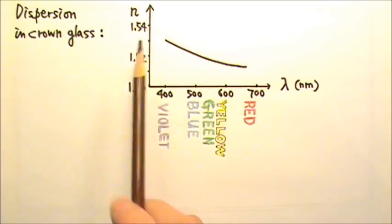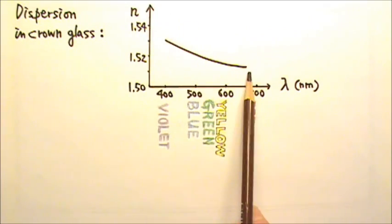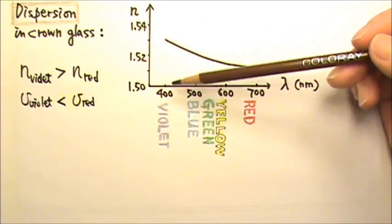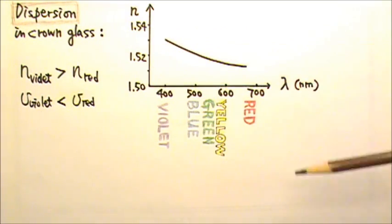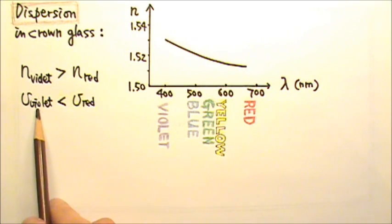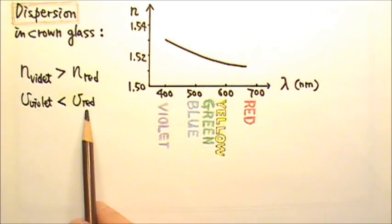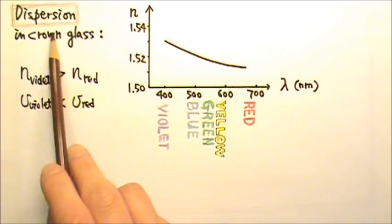In crown glass, the index of refraction versus the wavelength graph looks like this. This graph shows that violet light has a slightly bigger index of refraction than red light. That means the violet light has a slower speed in crown glass than red light. This behavior of light in material medium is called dispersion.